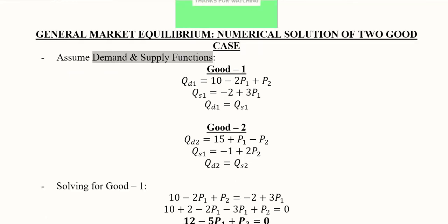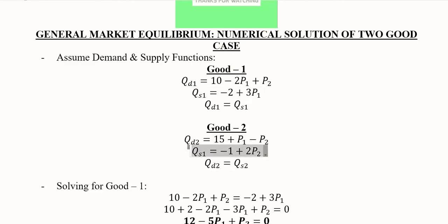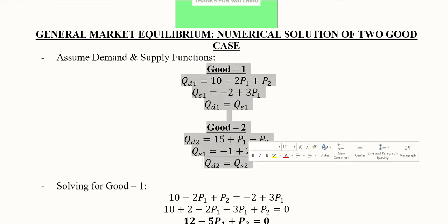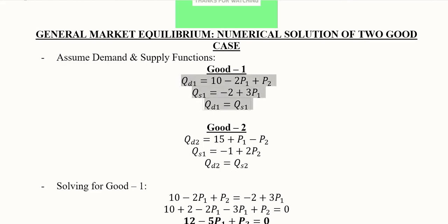In this set we have good one and good two. For good one we have a demand function and a supply function, and for good two we also have a demand function and a supply function. Equilibrium for good one is when qd1 equals qs1, and equilibrium for good two happens when demand and supply for it are equal.